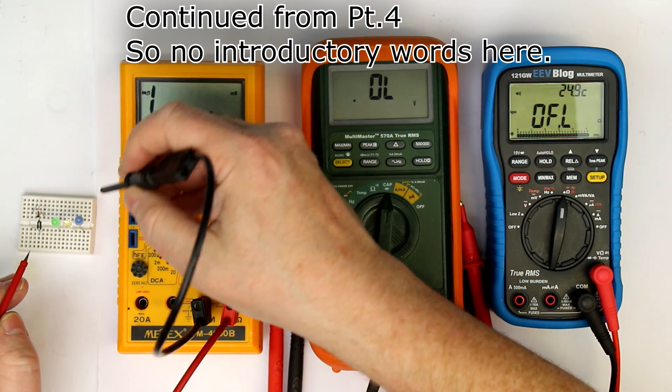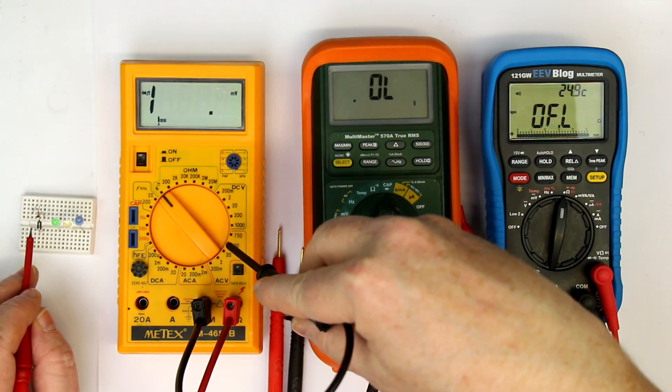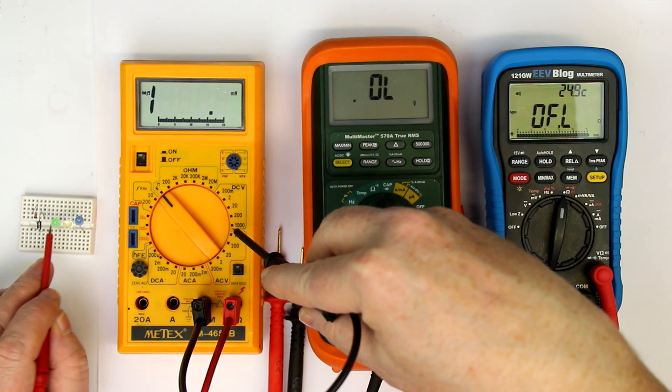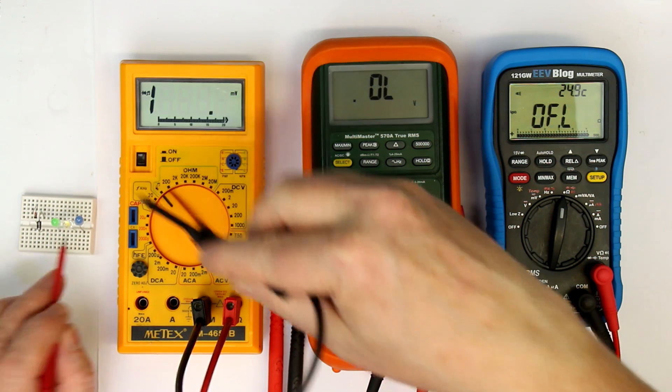The first component to measure are, of course, diodes. I put in an assortment of Schottky, a silicon, green LED, white and blue LED.